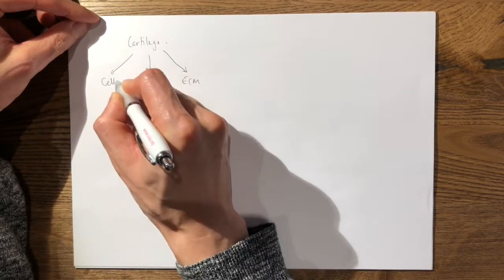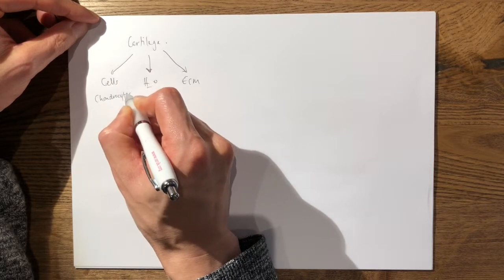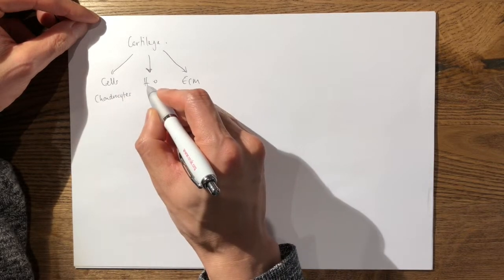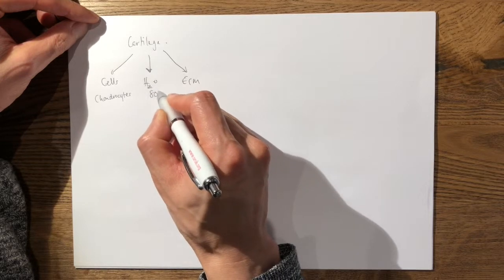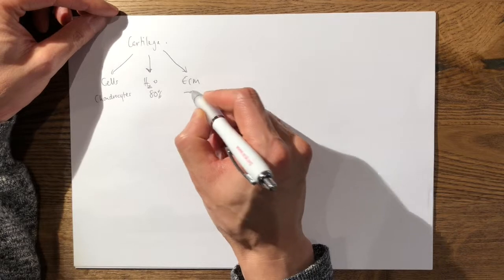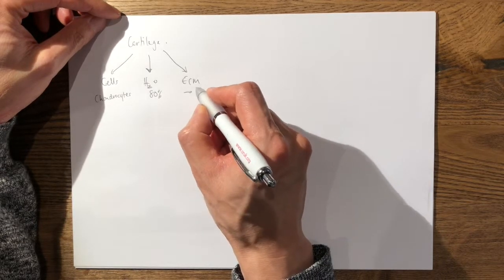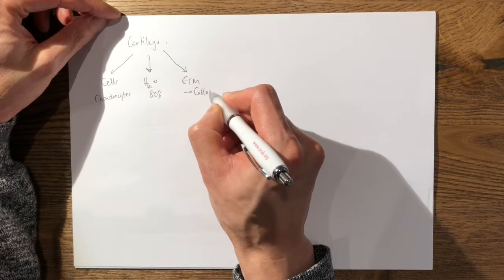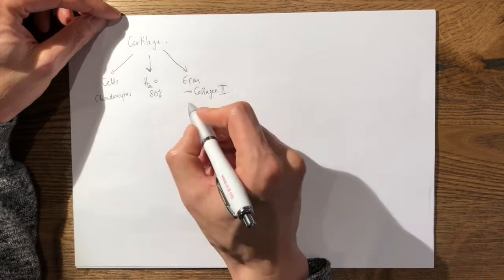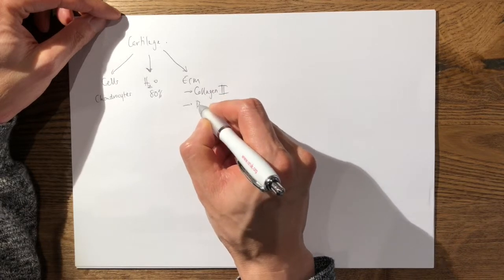So the cells are mainly that of chondrocytes. The water content is quite large, approximately 80%, whereas the extracellular matrix is largely composed of collagen, which is mainly type two in hyaline cartilage, and also proteoglycans.